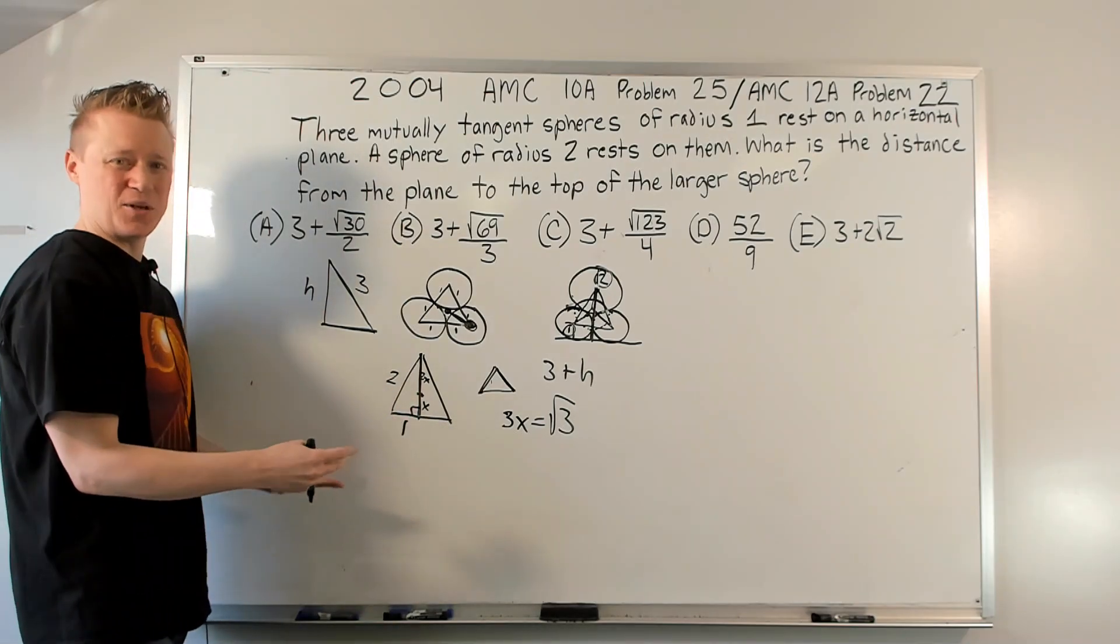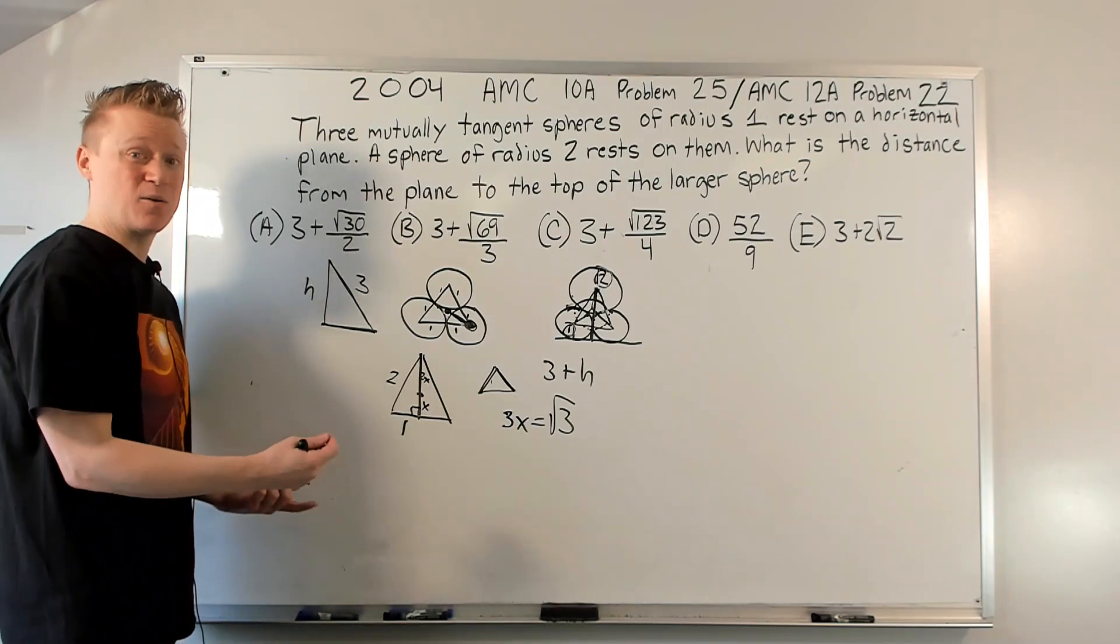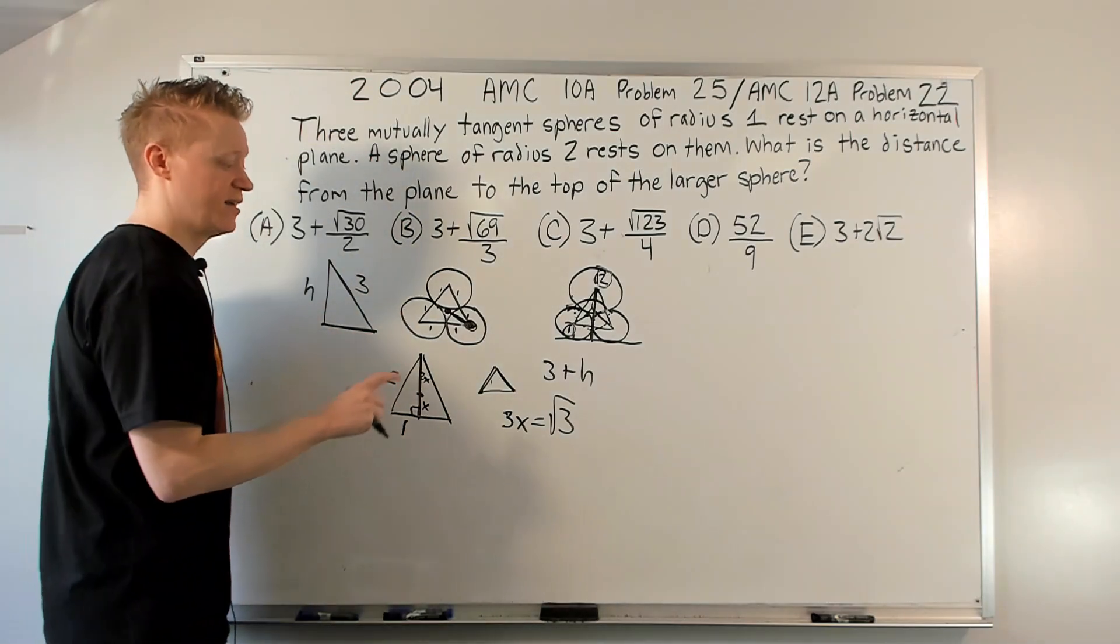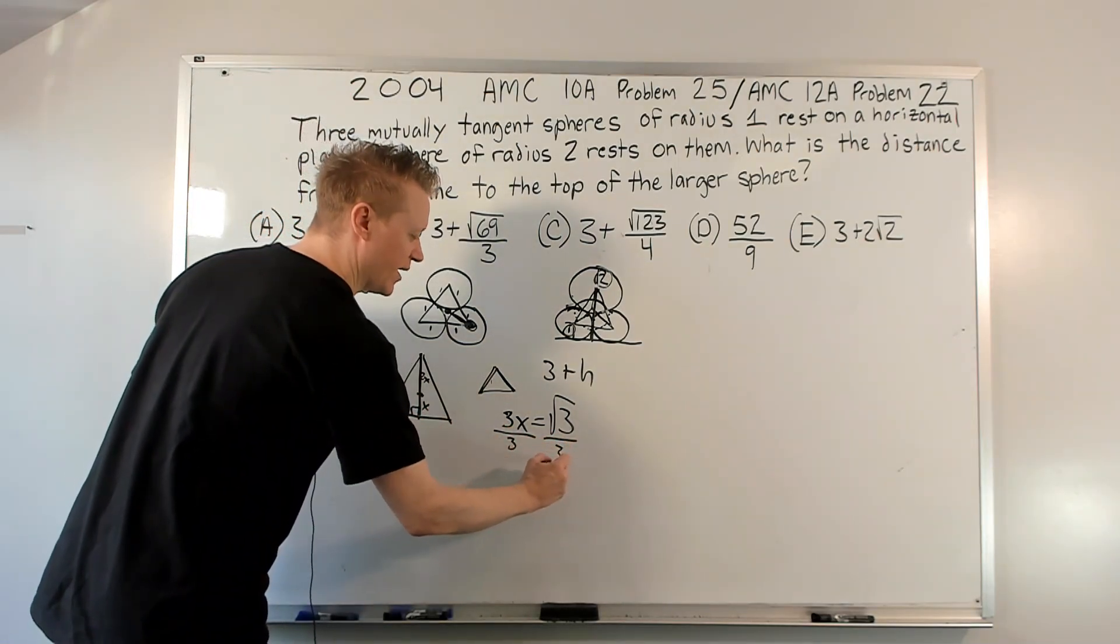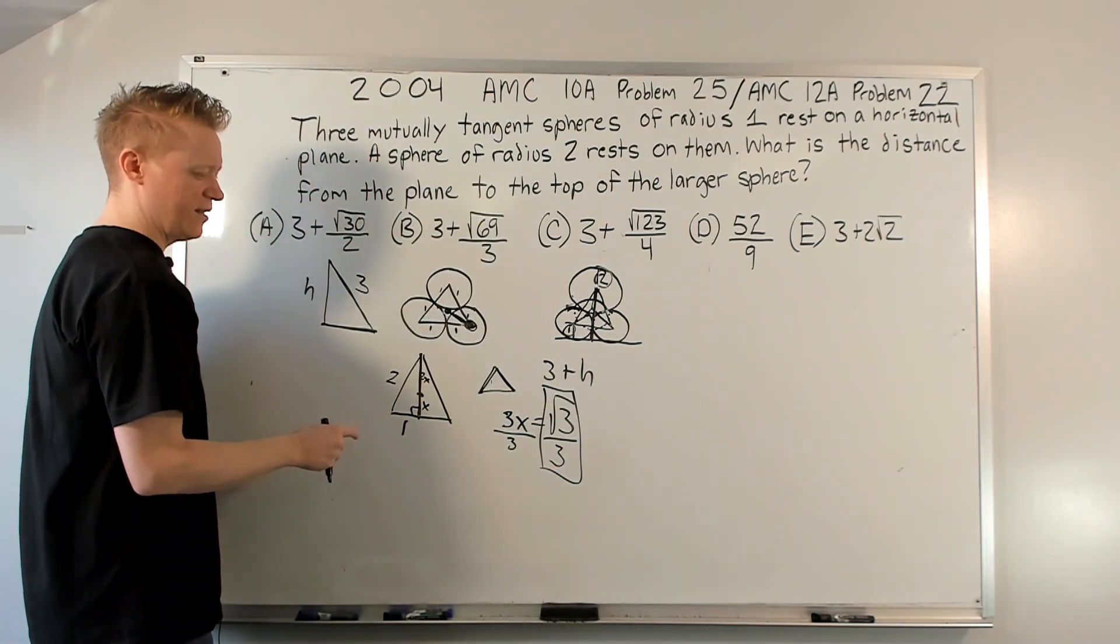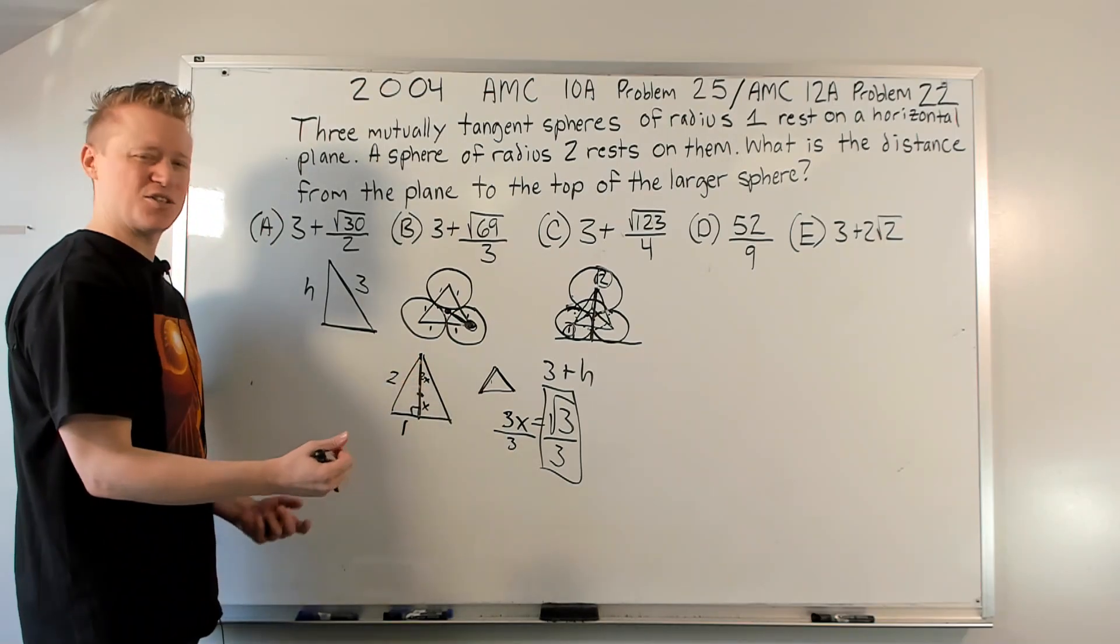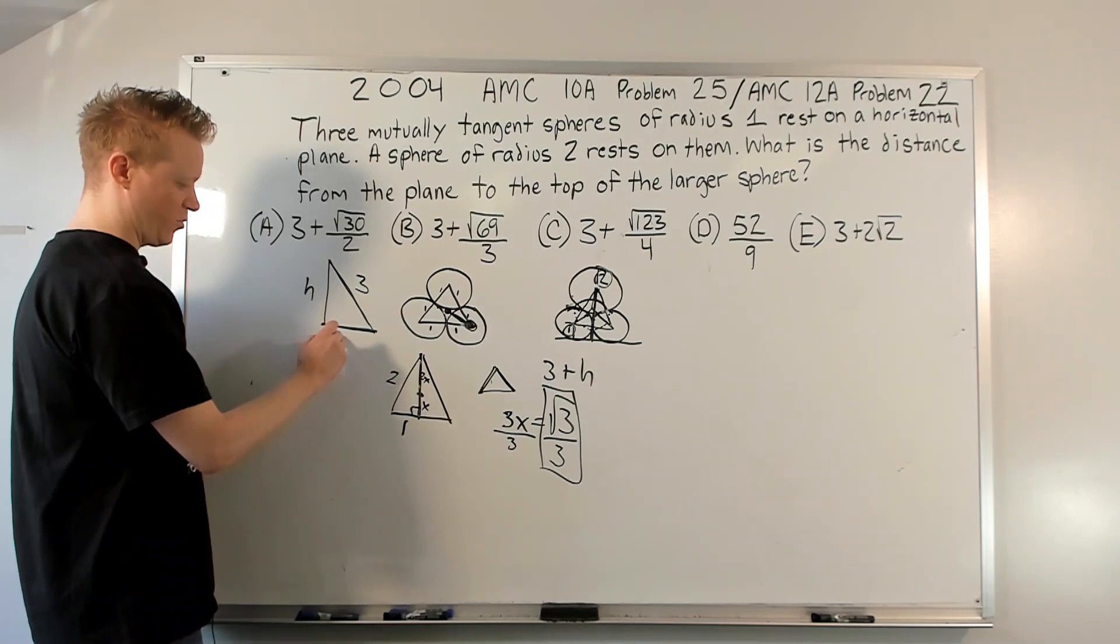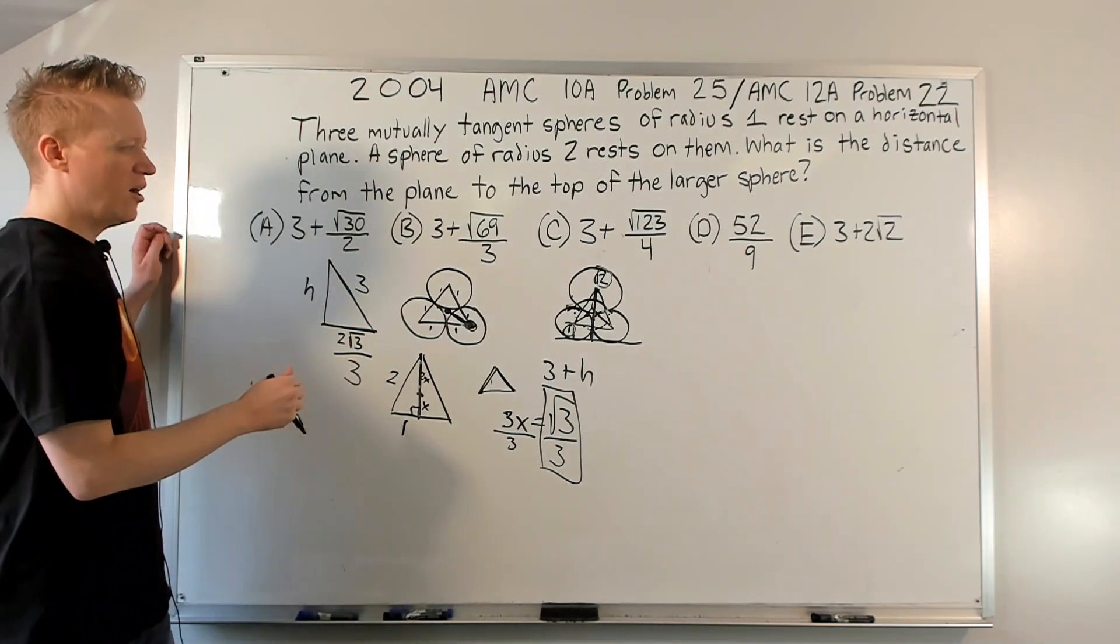Okay, so divide by three, divide by three. This is root three over three. Okay, that's what X is, but I've got two X. So I've got two root three over three. So this length right here is two root three over three. Okay, let's put it all together.